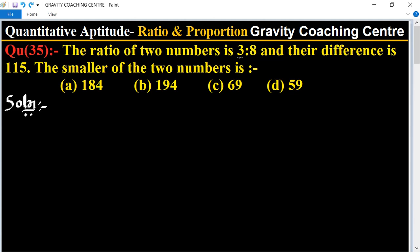In this question, the ratio of the two numbers is given and their difference is 115, so find the smaller number. First, let the two numbers be 3x and 8x.